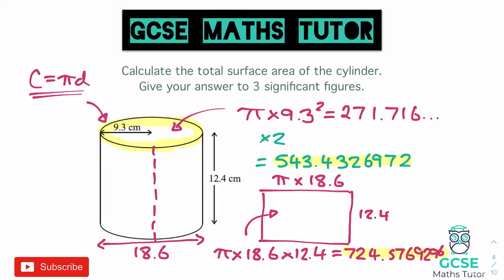Now we need to add all the areas together to get the total surface area. The key difficulty here is remembering to use the circumference as the length of that rectangle for the curved surface area. Adding the curved surface 724.576 plus the two circles 543.4326972, pressing equals, we get a final answer of 1,268.009627.